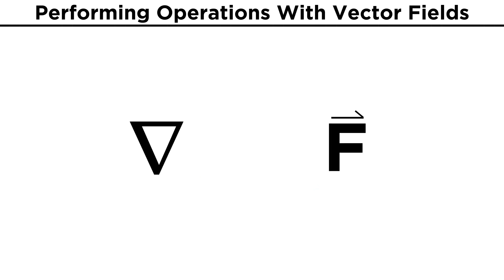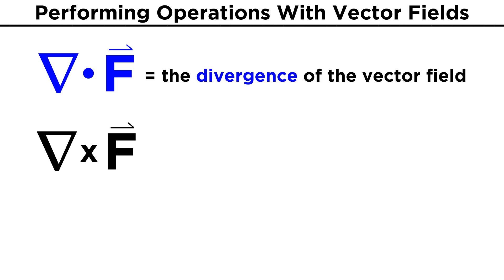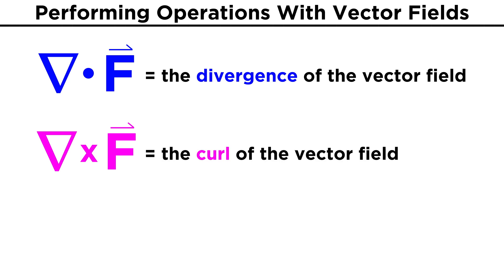There are two more uses for the del operator with vector fields, and these involve the vector dot product and cross product. We can take the del operator and dot it into a vector field F — this is referred to as the divergence of F. Similarly, we can take del cross F, and this is referred to as the curl of F. Let's take a closer look at what these expressions are.